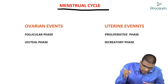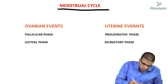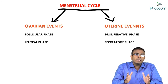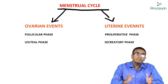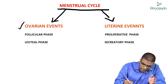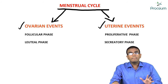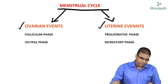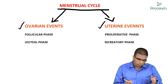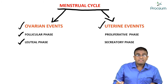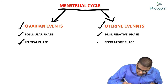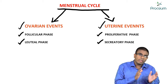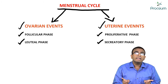The menstrual cycle in a female is mainly divided into two events: ovarian events and uterine events. At the same time in a female, there are ovarian events happening and uterine events happening. The ovarian events are divided into two phases — follicular phase and luteal phase. The uterine events are divided into proliferatory phase and secretory phase.